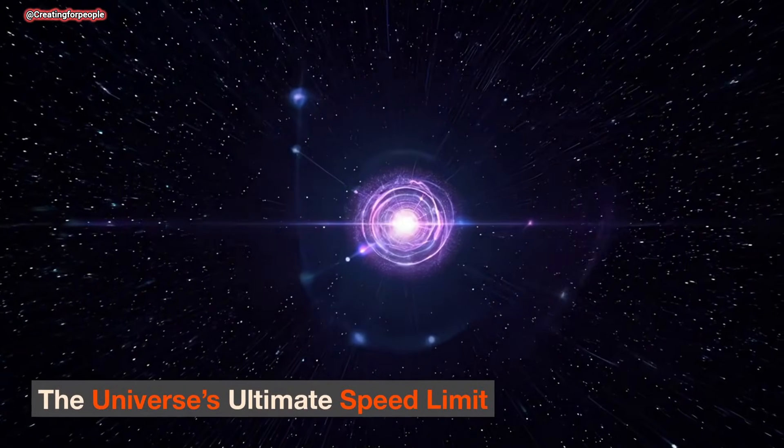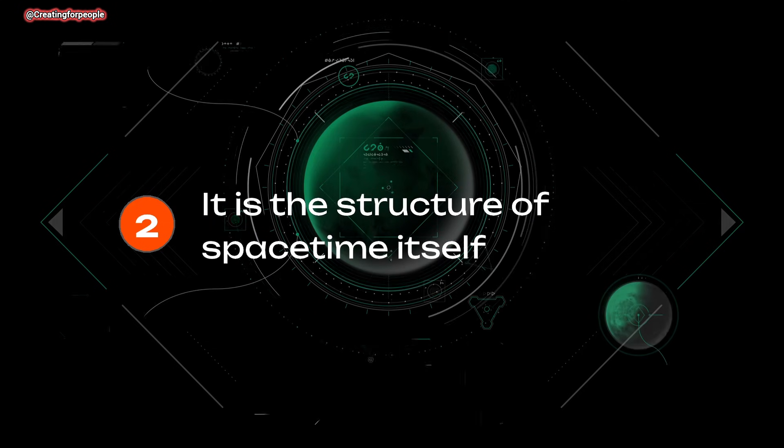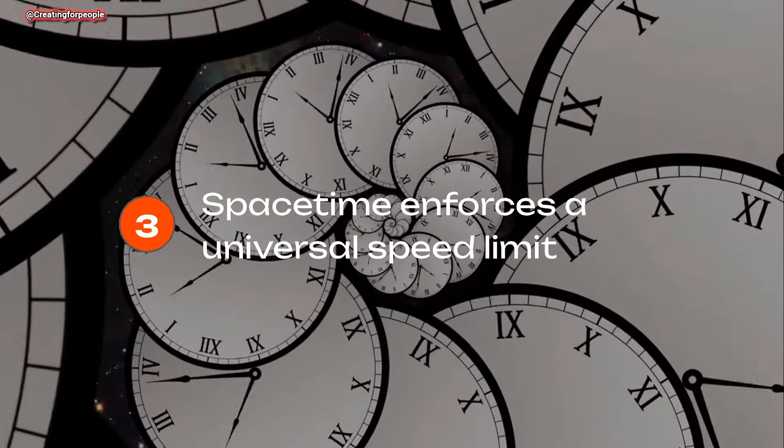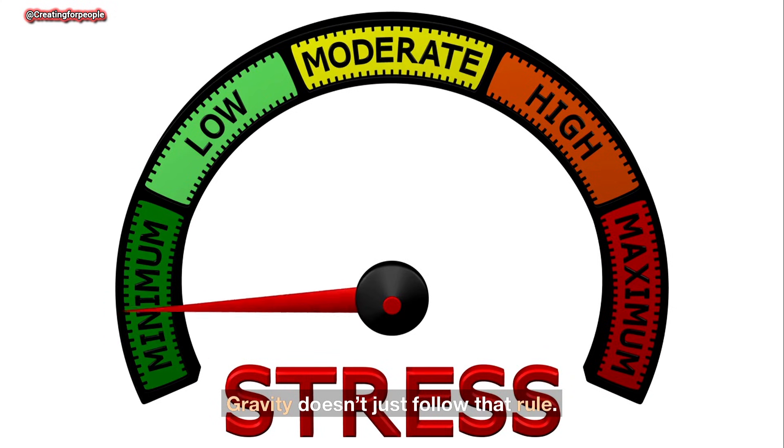The universe's ultimate speed limit. So why does gravity equal the speed of light? Because gravity is not a force traveling through space. It is the structure of space-time itself. Space-time enforces a universal speed limit. That limit is the speed of light. Gravity doesn't just follow that rule. It defines it.